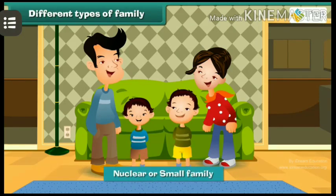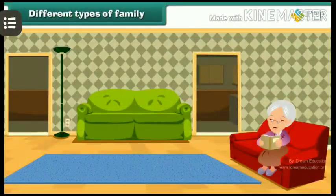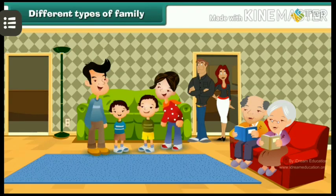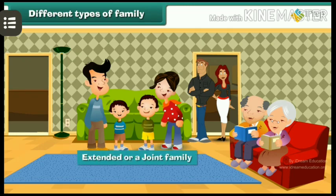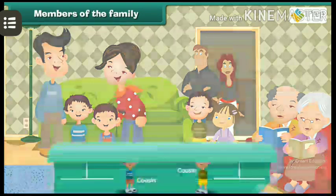A family consisting of two parents and their children is called a nuclear or small family. A family that includes grandmothers, grandfathers, aunts, and uncles in addition to parents and children is called an extended family or a joint family.